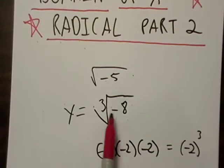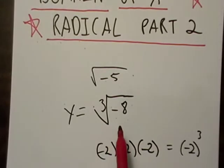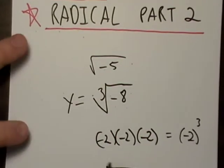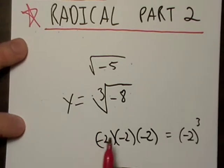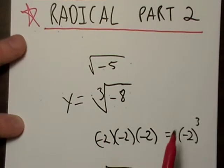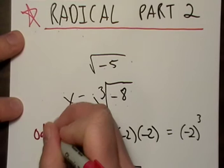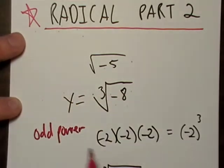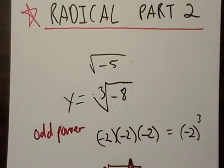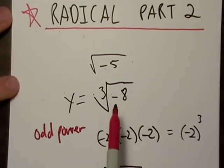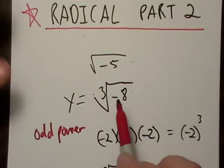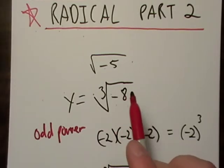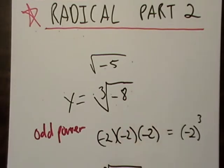But if you have the cube root of a number, that situation doesn't apply, because remember that if I have an odd power, if I take a negative number and raise it to an odd power, it stays odd. So I'm allowed to have a negative number in the radical of a cube root. It's perfectly okay.